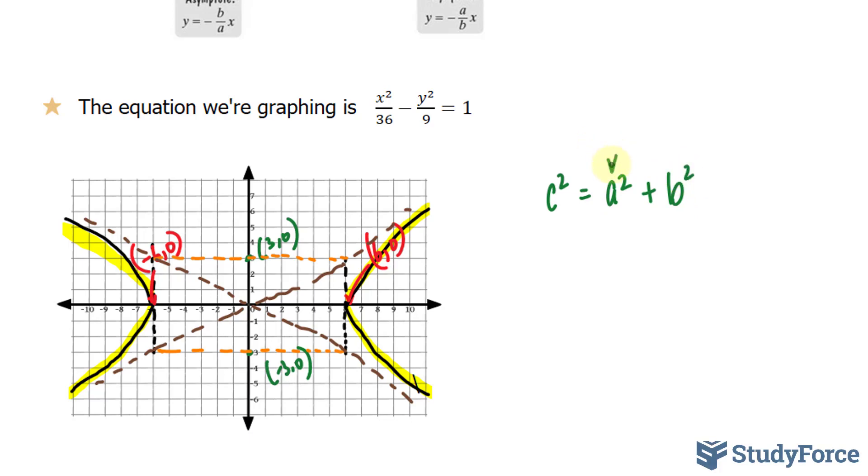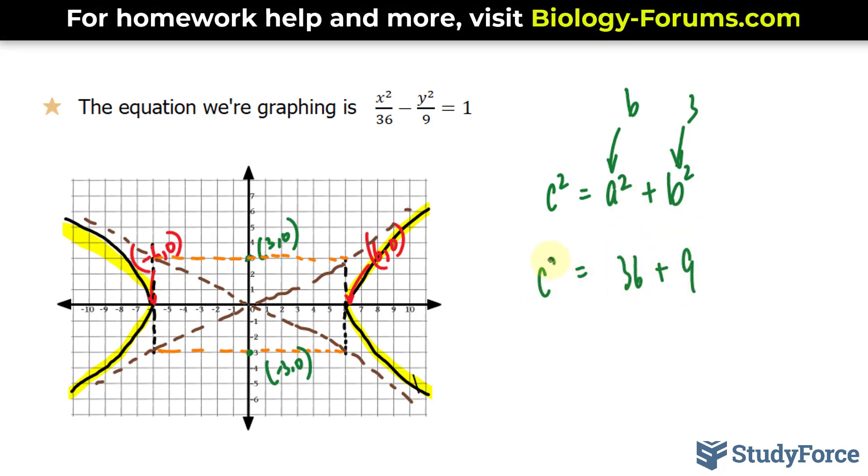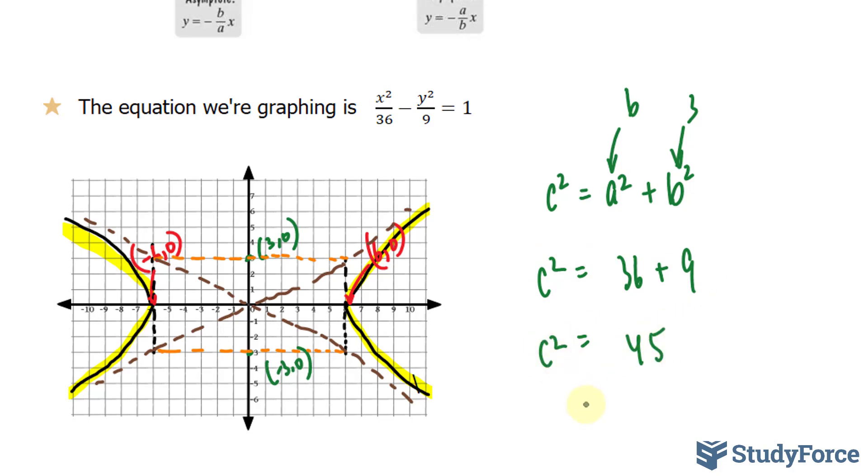Remember what our a value was. It was 6, and b was 3. So let's substitute those values. We have 6 to the power of 2, that's 36, plus 9. Adding these up, we end up with 45. And now we'll take the square root of 45.